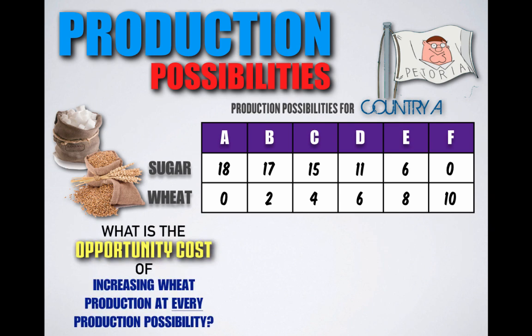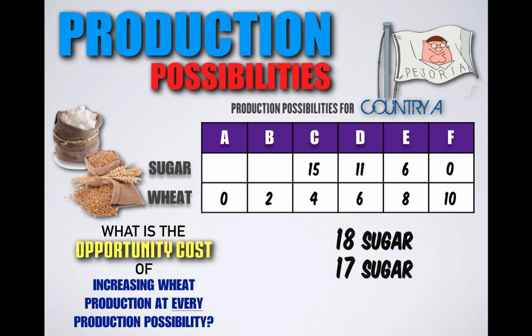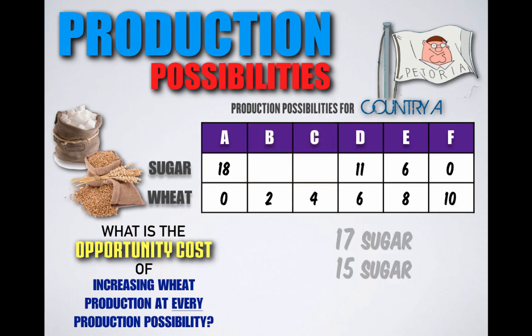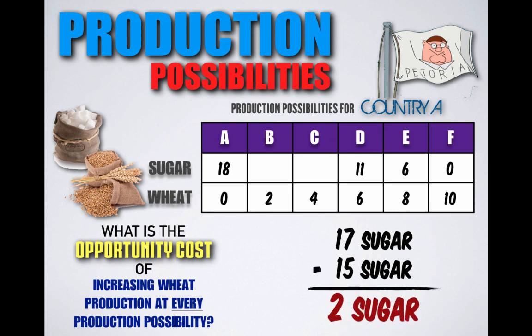What is the opportunity cost of increasing wheat production at every production possibility for the country of Petoria? Remember that opportunity cost is what is given up when making a decision. If Petoria shifts production from combination A to combination B, they would decrease sugar production from 18 units to 17 units in order to gain more wheat — so the opportunity cost is one unit of sugar. Shifting from combination B to combination C decreases sugar from 17 to 15 units, so the opportunity cost would be two units of sugar.